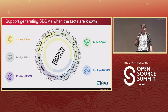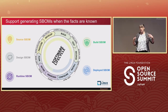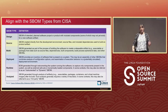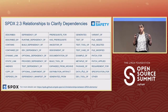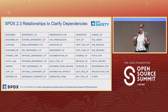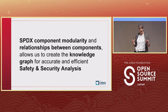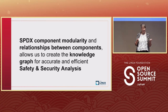We're trying to make sure we can support understanding where information has come from in the lifecycle — did someone try to reason about it from a third-party tool, or did the people who were working on it generate it and attest that it's valid? We've worked very hard to align with the SBOM types coming out of the CISA working groups. We're also adding the concept of lifecycle information as well as one-to-many relationships so we can be more precise. SPDX is very much focused on component modularity, and putting relationships between components allows us to create that knowledge graph we're going to need for efficient and accurate safety and security analysis.